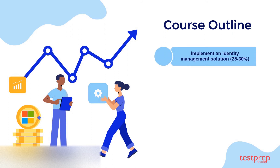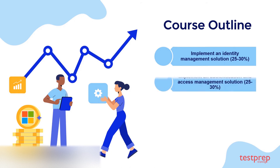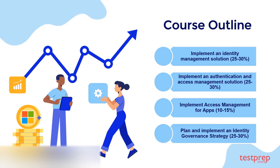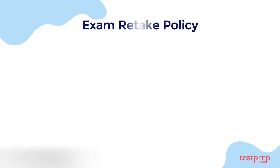The course outline consists of four domains: 1. Implement an identity management solution, which comprises 25 to 30% weightage in the exam. 2. Implement an authentication and access management solution, which comprises 25 to 30% weightage. 3. Implement access management for apps, which comprises 10 to 15% weightage. 4. Plan and implement an identity governance strategy, which comprises 25 to 30% weightage.